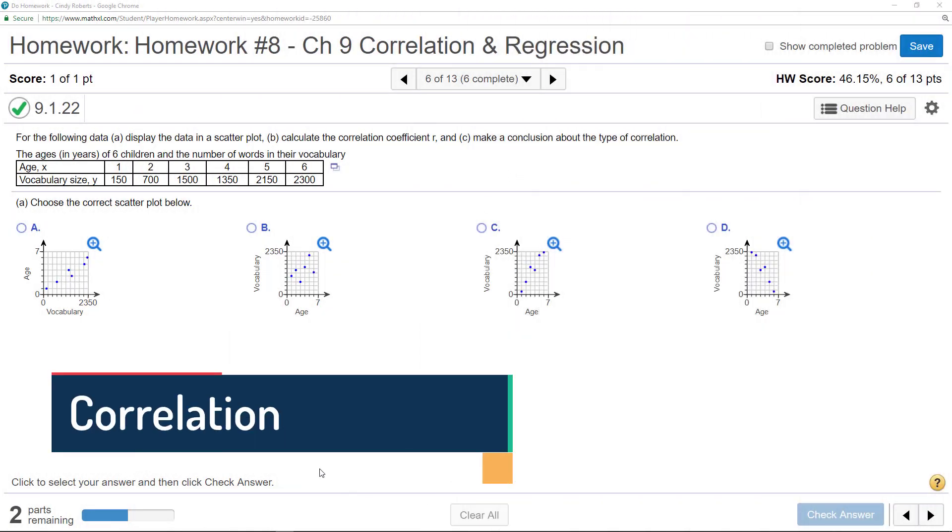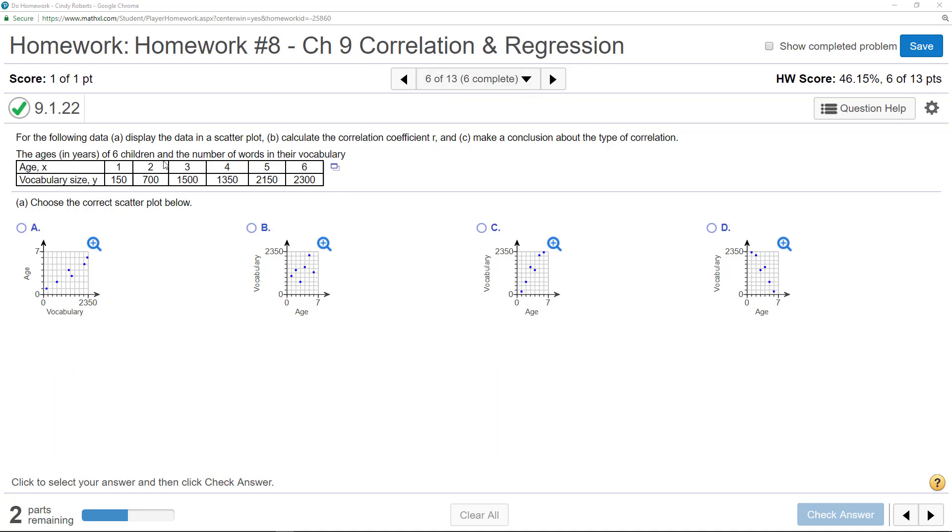Hopefully you watched the review video of what is correlation, a correlation coefficient, and regression analysis. Basically, we want to see in this data set if there's some kind of relationship between the ages in years of six children and the number of words in their vocabulary.